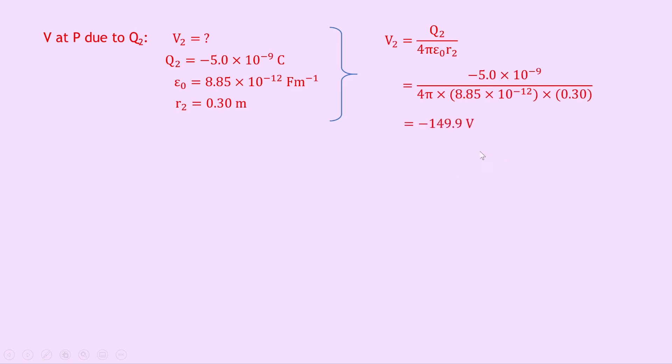We can now find the electrical potential V at P due to Q2, which we can call V2. And we can write down that we know Q2 is minus 5 times 10 to the minus 9 coulombs. Epsilon naught again is 8.85 times 10 to the minus 12 farads per meter, and r2 is 0.3 meters. Writing down our equation, we have V2 equals Q2 over 4 pi epsilon naught r2. Substituting in our numbers gives us minus 5 times 10 to the minus 9 over 4 pi times 8.85 times 10 to the minus 12 times 0.3. And putting this into your calculator, you should get an answer of minus 149.9 volts.